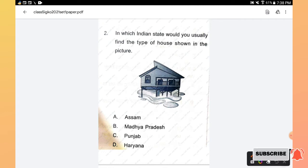Question number 2: In which Indian state would you usually find the type of house shown in the picture? The name of the house which is given in the figure is Ikra house.